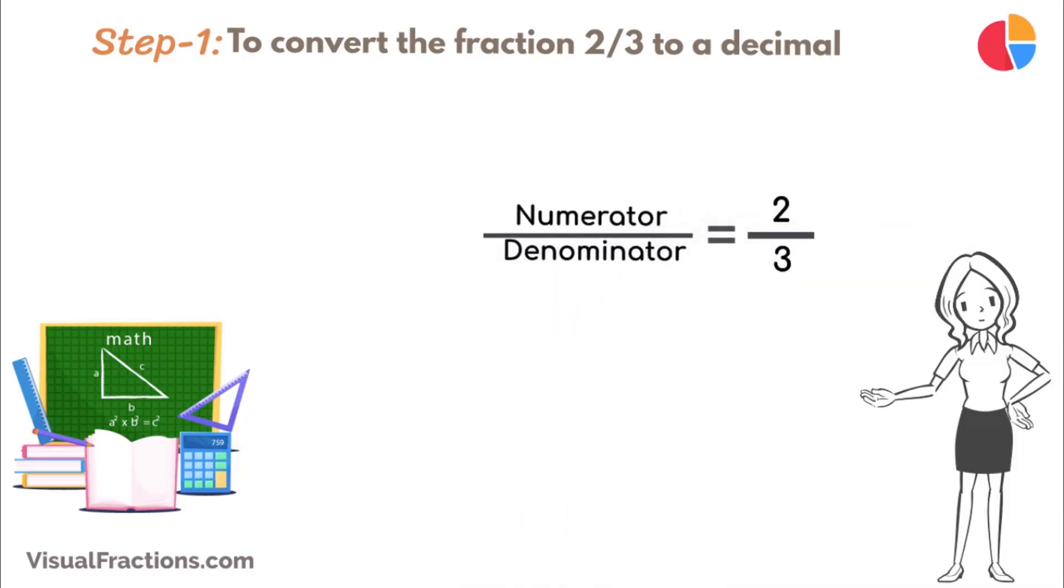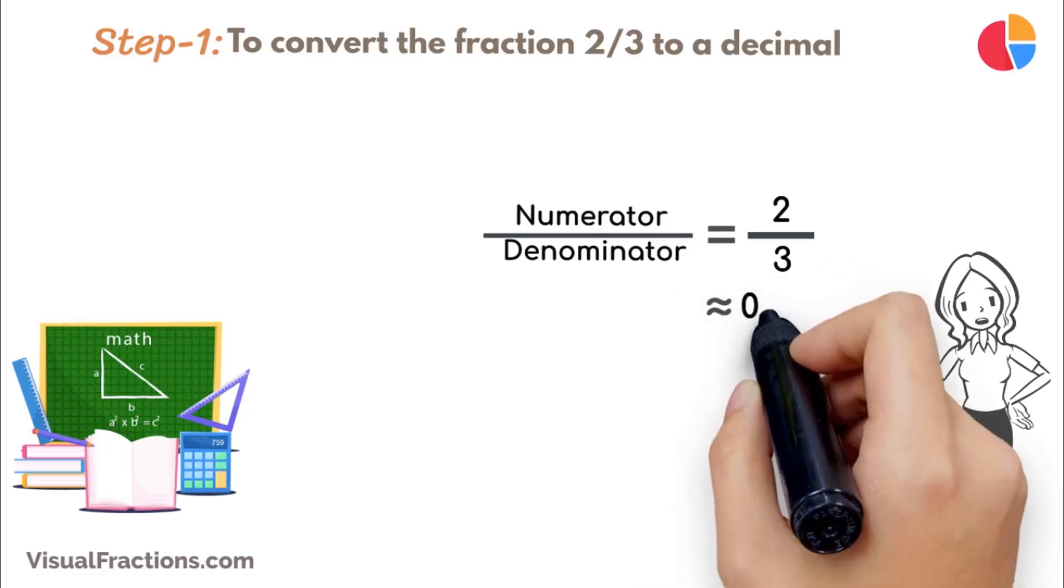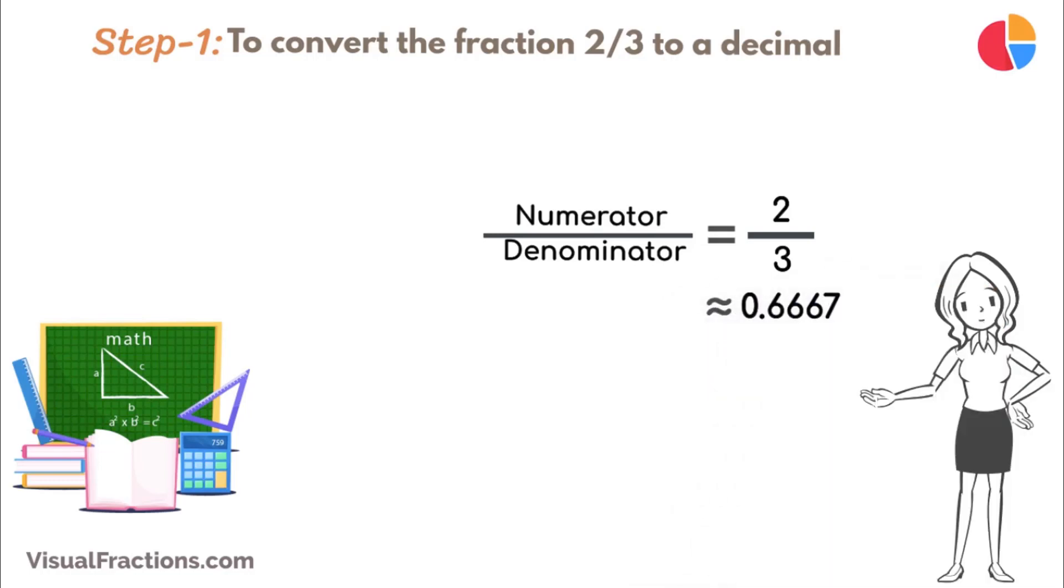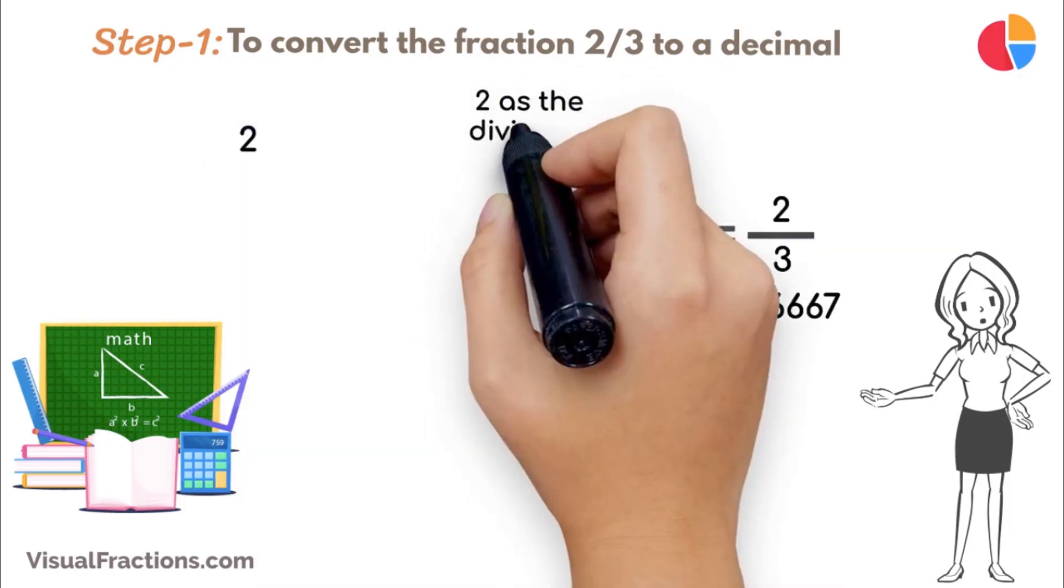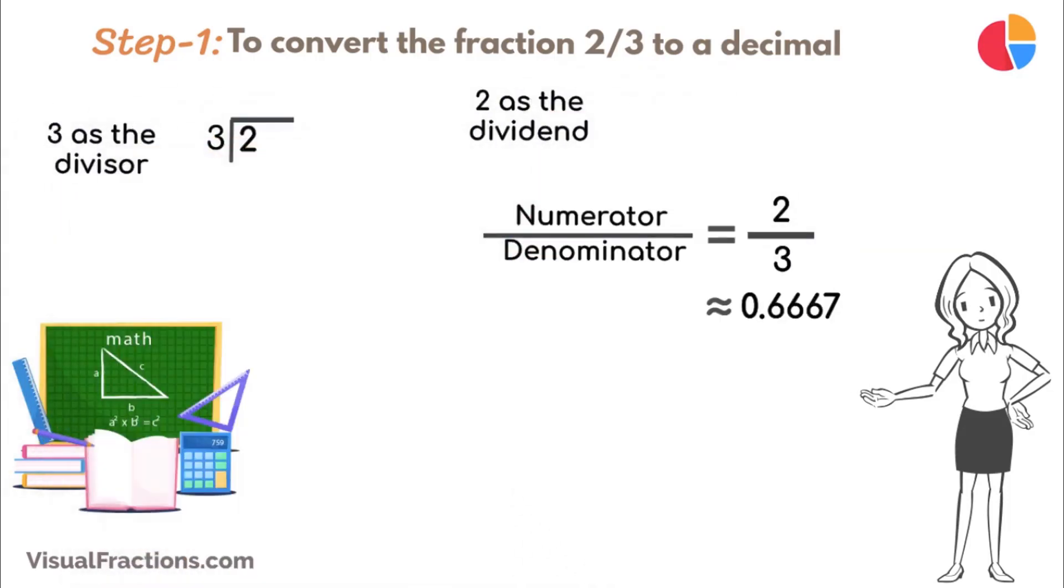Using a calculator, the answer we get is approximately 0.6667. But let's perform this division by hand using long division. Place 2 as the dividend and 3 as the divisor. Since 3 doesn't fit into 2, place a decimal point in our quotient and bring down a 0, making it 20.